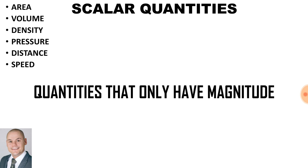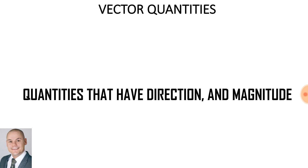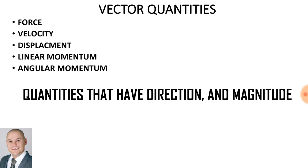A vector quantity is a quantity that has both magnitude and direction, such as force, velocity, displacement, linear momentum, and angular momentum.